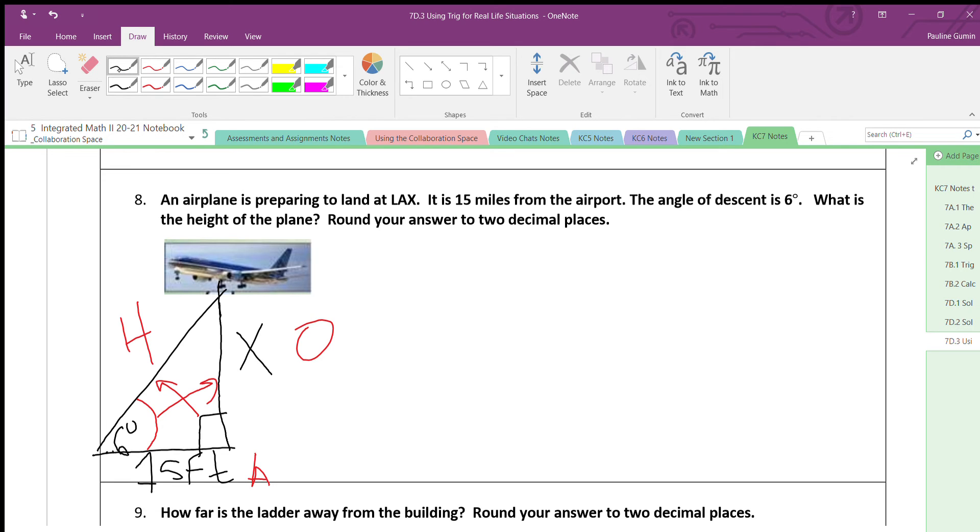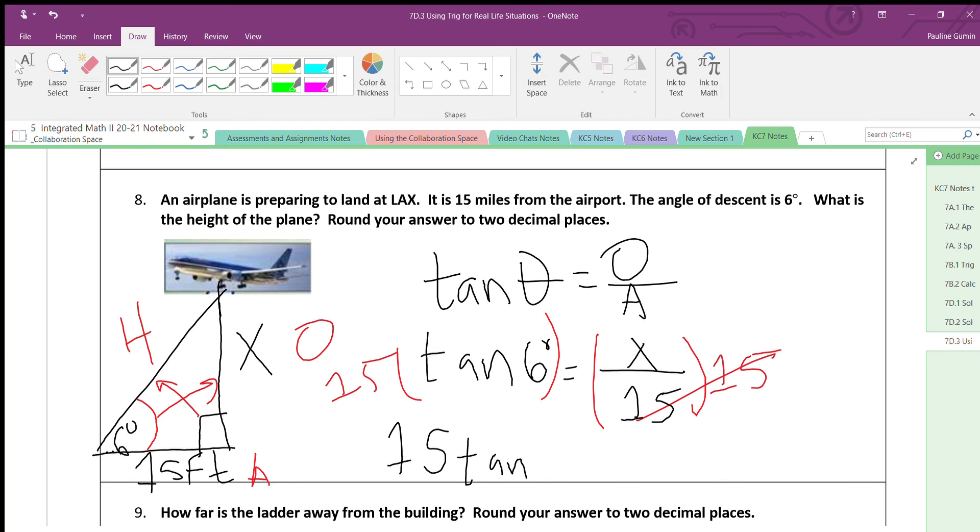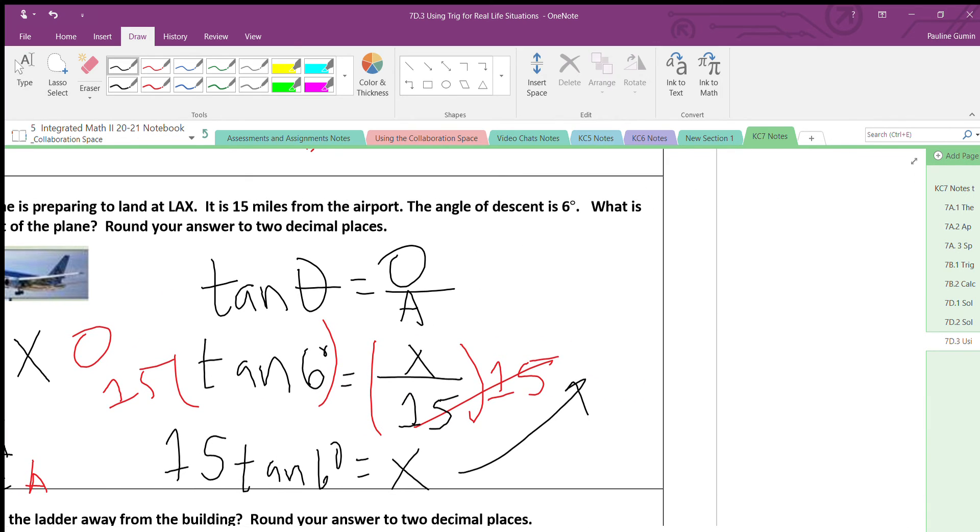Based on SOHCAHTOA, I'm going to be using tangent because it's opposite over adjacent. Alright, so we have the tangent of 6 degrees equals x over 15. Beautiful. This only takes one step. I'm going to multiply both sides by 15 to get rid of it on the right hand side. So I end up with 15 tangent of 6 degrees equals x. Of course, I'm going to plop that into my calculator to find out how high up the plane is. And what I got is 1.58 miles.